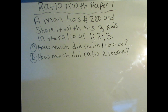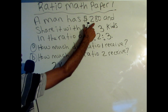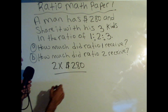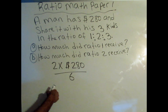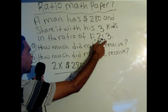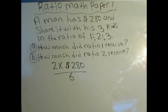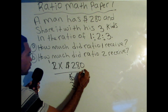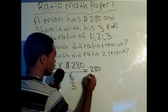Now let's find Part B. Part B asks how much did ratio 2 receive. So we start with 2 times the total amount of money, which is $280, divided by the total ratio of 6. For ratio 2, we can cancel: 2 goes into 2 once, and 2 goes into 6 three times. So now we multiply 1 times 280, giving us 280 divided by 3.